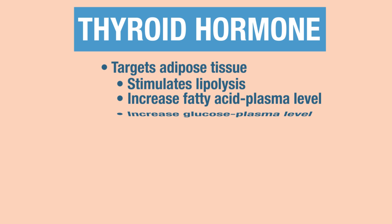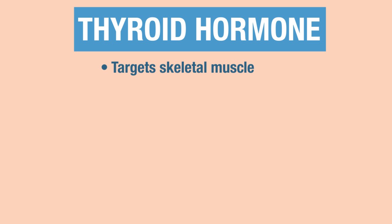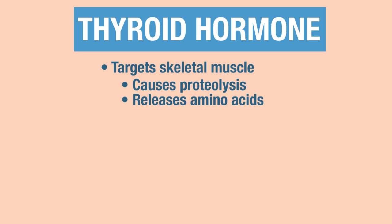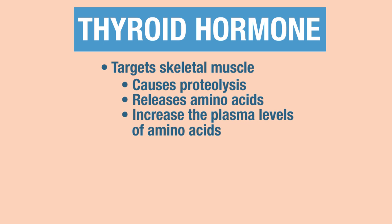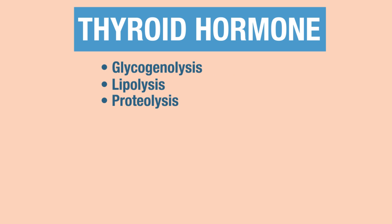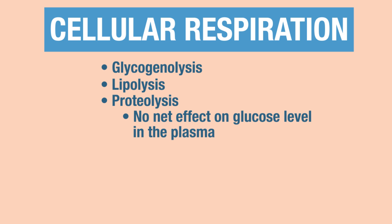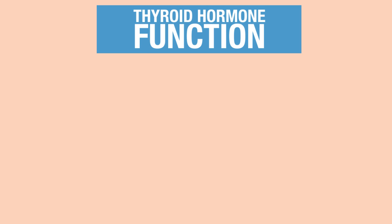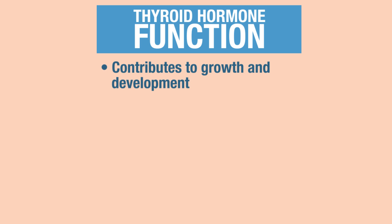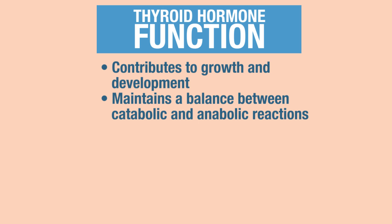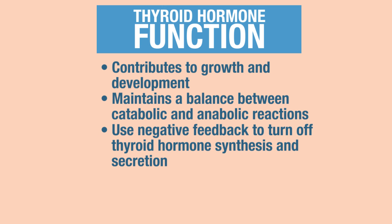Thyroid hormone can also target skeletal muscle and cause proteolysis, releasing amino acids and increasing plasma amino acid levels. All of these — glucose, fatty acids, and amino acids — can be used as substrates for cellular respiration, so there is no net effect on plasma glucose level. The big picture of thyroid hormone function is that it contributes to growth and development and maintains a balance between catabolic and anabolic reactions. Negative feedback is used to turn off thyroid hormone synthesis and secretion.